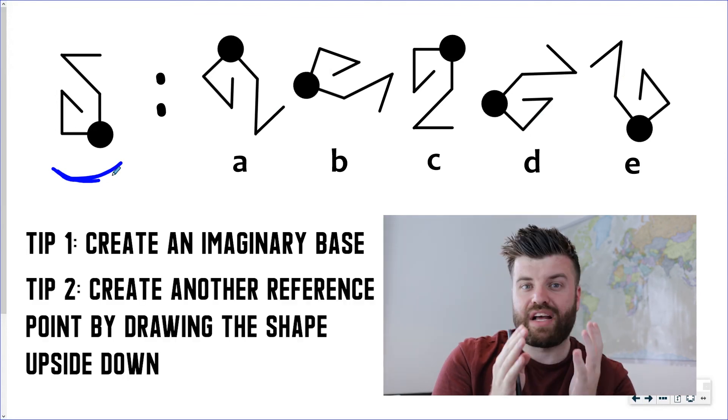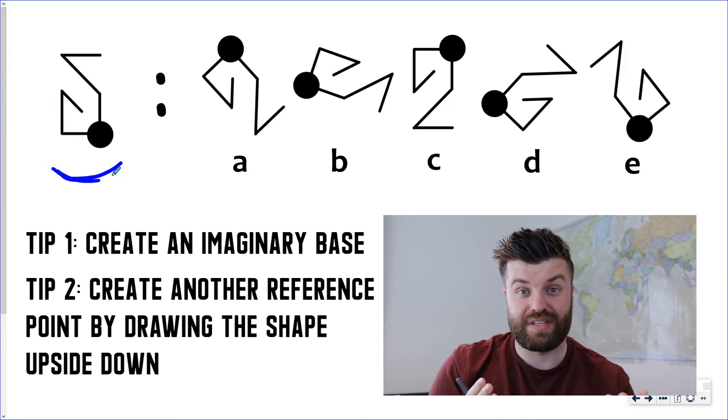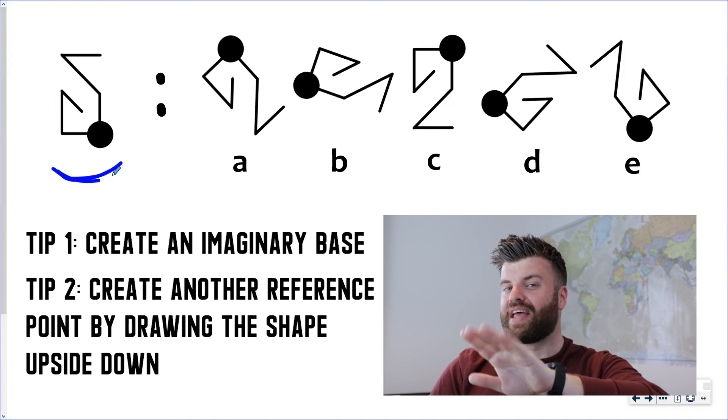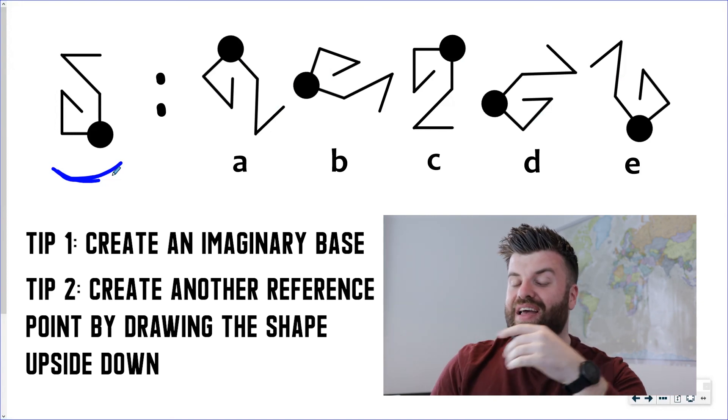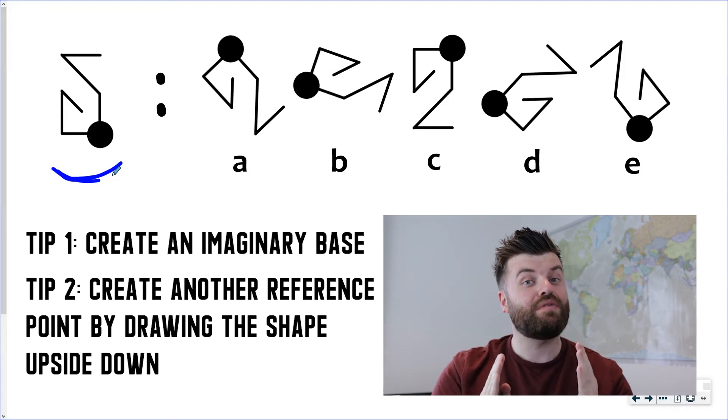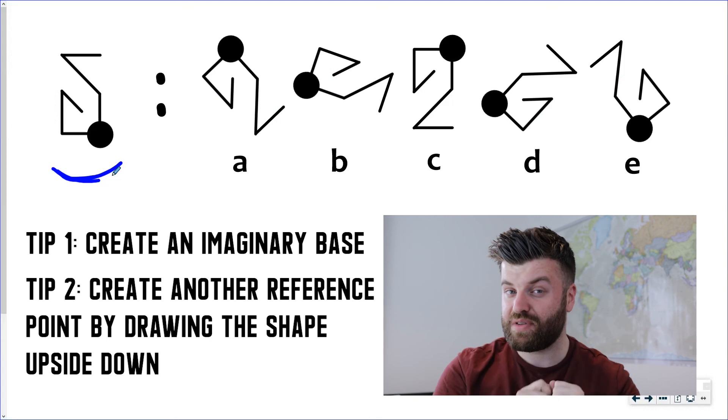Draw a shape that's 180 degrees rotated you have two reference points now to work from which can really help you find the right shape. So have a look at the one on the screen I want you to try and find an answer and if you get one if you think you've found the shape which is exactly the same as the one on the left but has just been rotated let us know in the comment section down below.